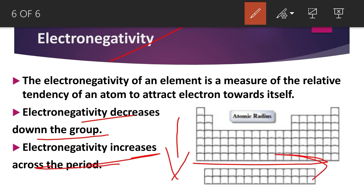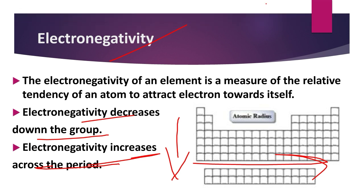So that covers all four terminologies used in ionic substitution: atomic radius, ionic radius, ionic potential, and electronegativity. The next video will be on ionic substitution using these terminologies. Thank you so much.